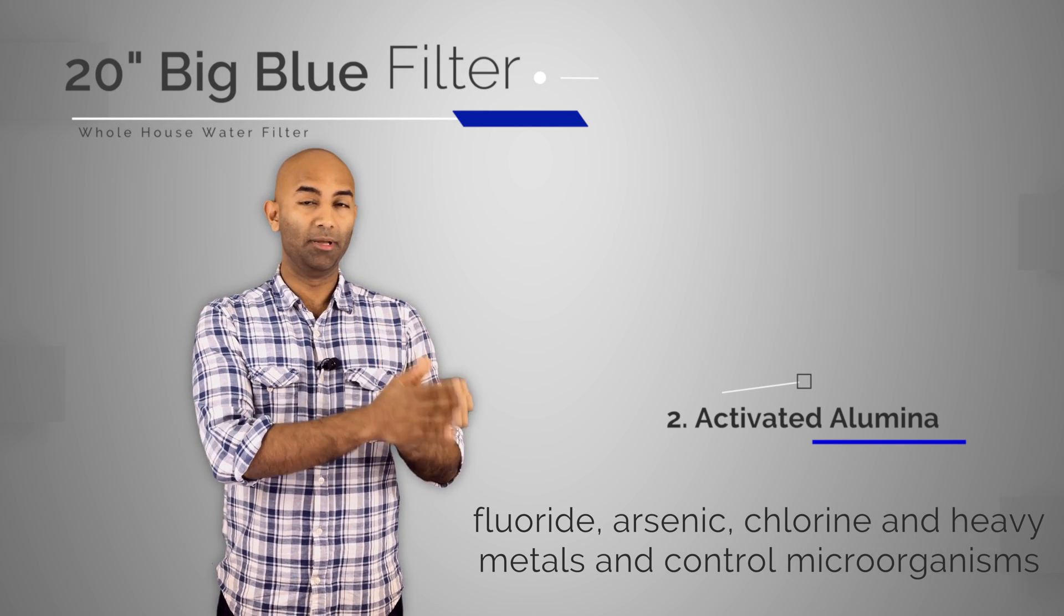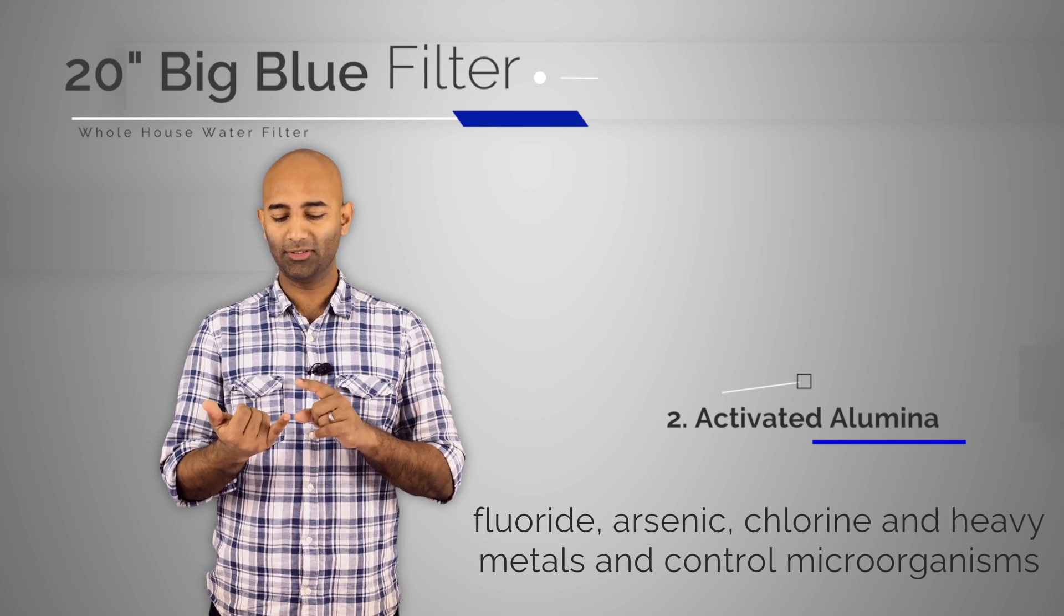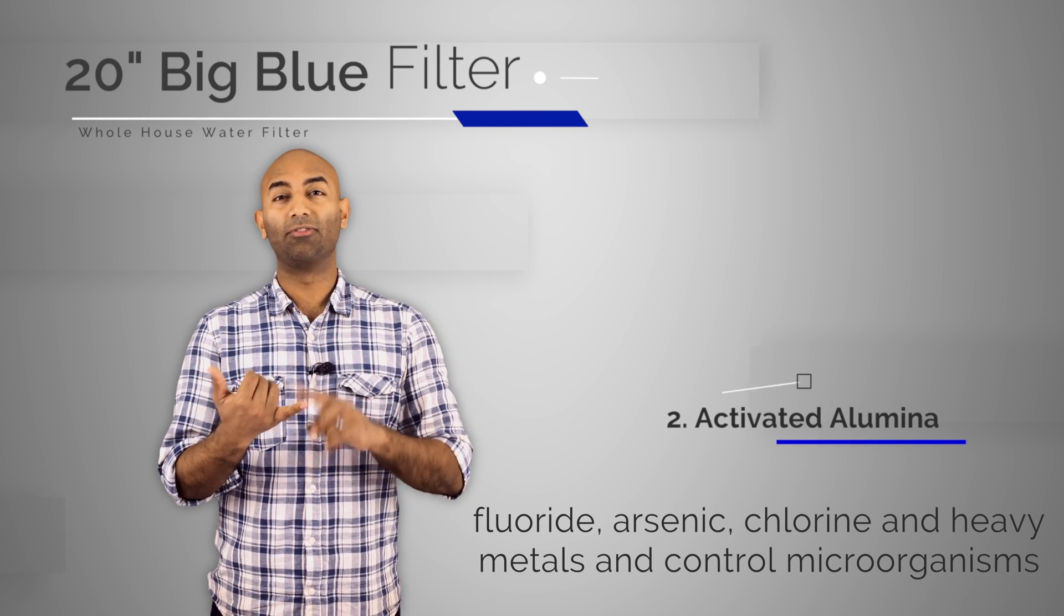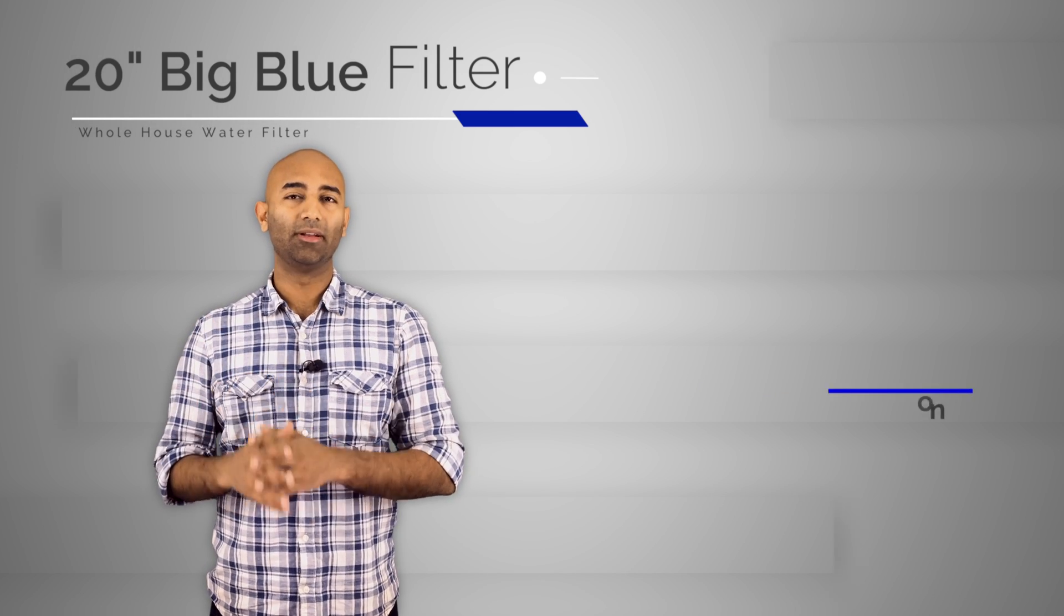For example the big blue filter that we were looking at had an activated alumina filter. I'd never heard of this before but basically it removed a lot of cool stuff, fluoride and some of the other chloridamides. The last stage would be the activated carbon.